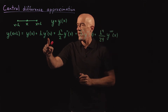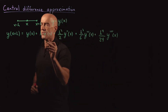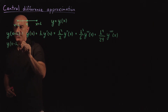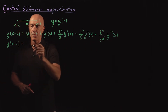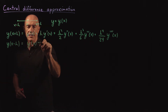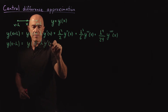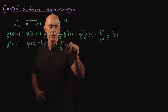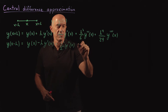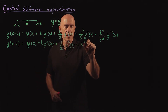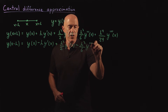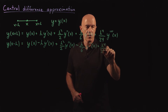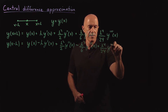We can see the derivative term here, and that's what we'll be looking for. To get this derivative, we can also Taylor series expand at x minus h. The only difference is h goes to minus h, so we get: y(x minus h) equals y(x) minus h·y′(x) plus h²/2·y″(x) minus h³/6·y‴(x) plus h⁴/24·y⁽⁴⁾(x).